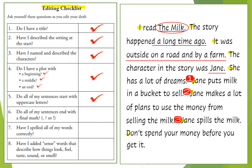Number six: do all of my sentences end with a final mark? This is talking about punctuation — a period, a question mark, or an exclamation point. Looking at my first sentence, I have a period. My second sentence ends with a period, so does my third, fourth, and all remaining sentences. I ended all of my sentences with a final mark. I used periods for all of them, which is pretty common when you are writing a narrative piece or retelling. Check — I can check that off.